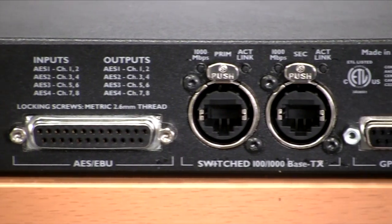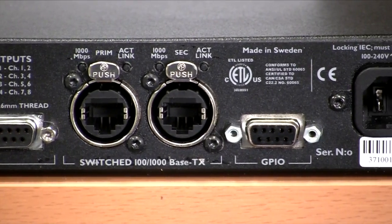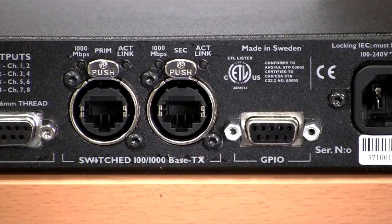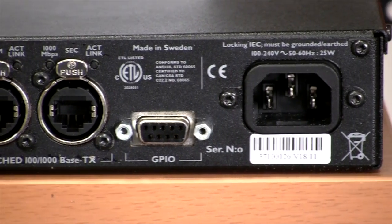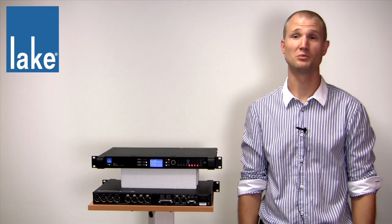Then we have dual gigabit Ethernet connectors with link connectivity LEDs. GPIO is on a DB9 and the detachable unlockable IEC power connector is to the far right. The LM series is a Dante device with four inputs and eight outputs.